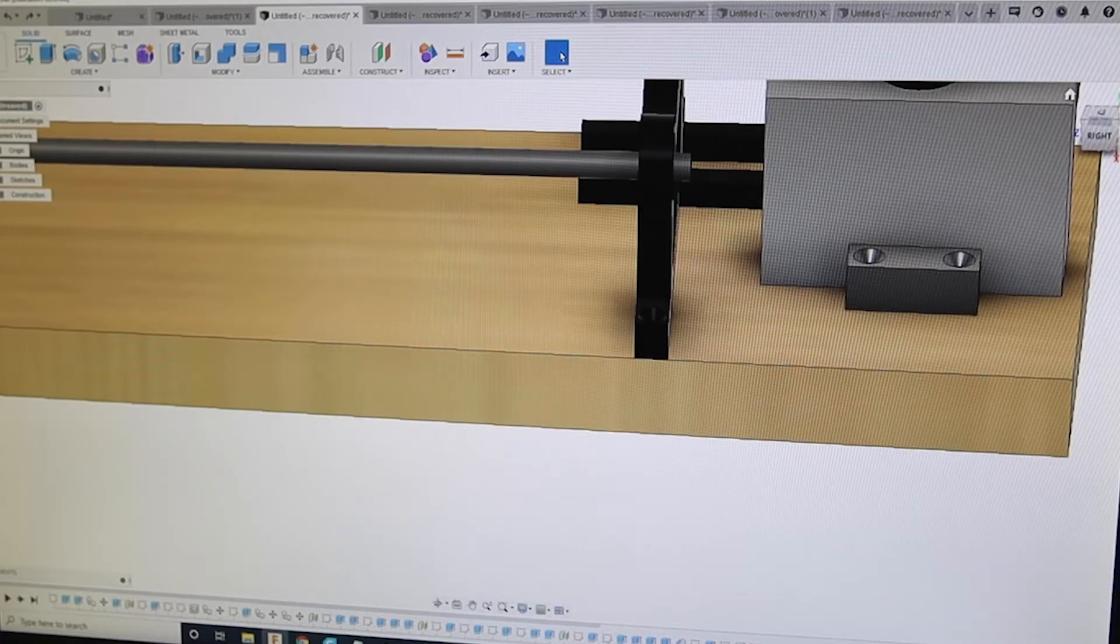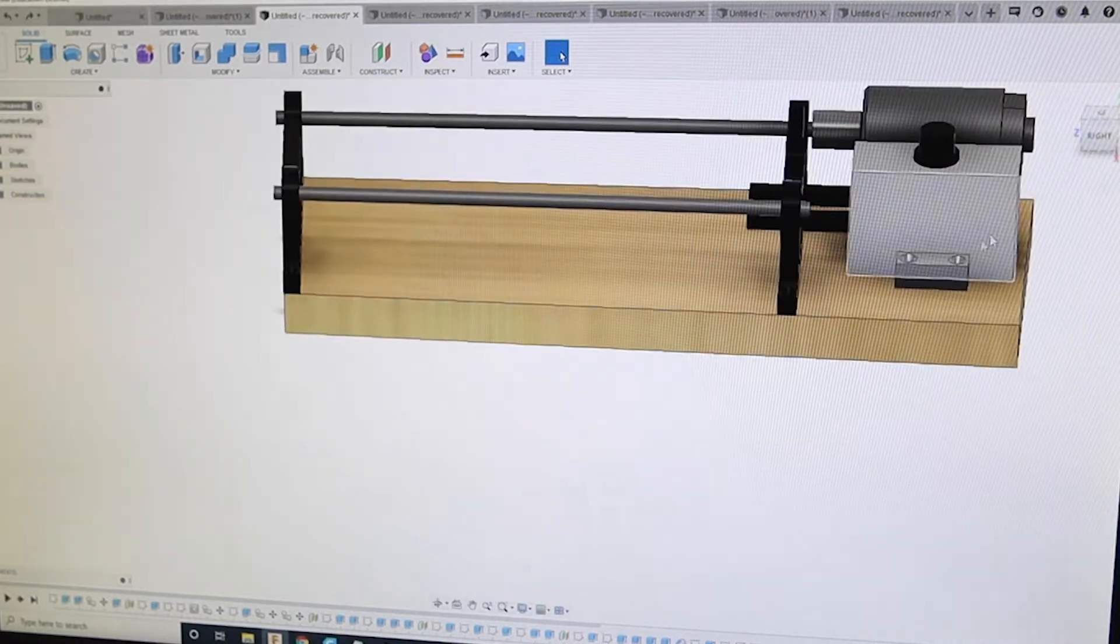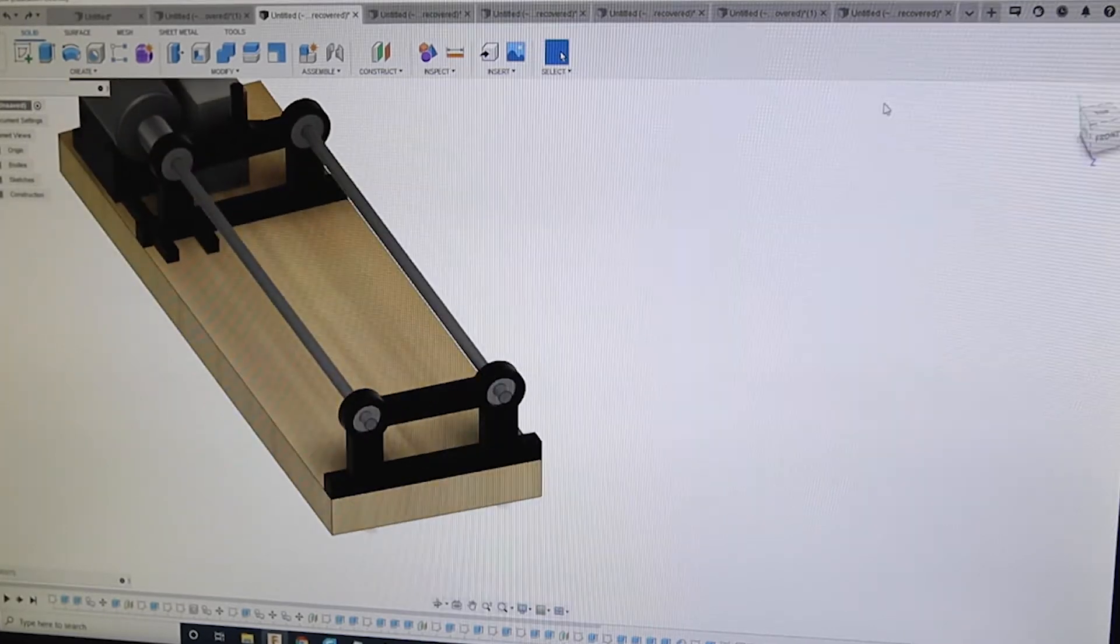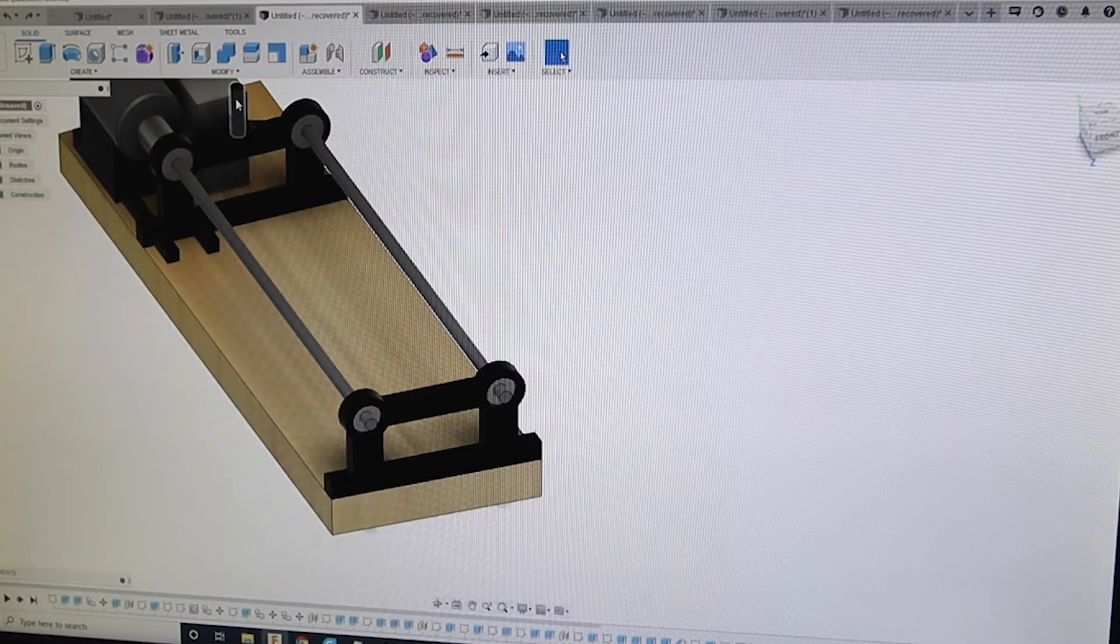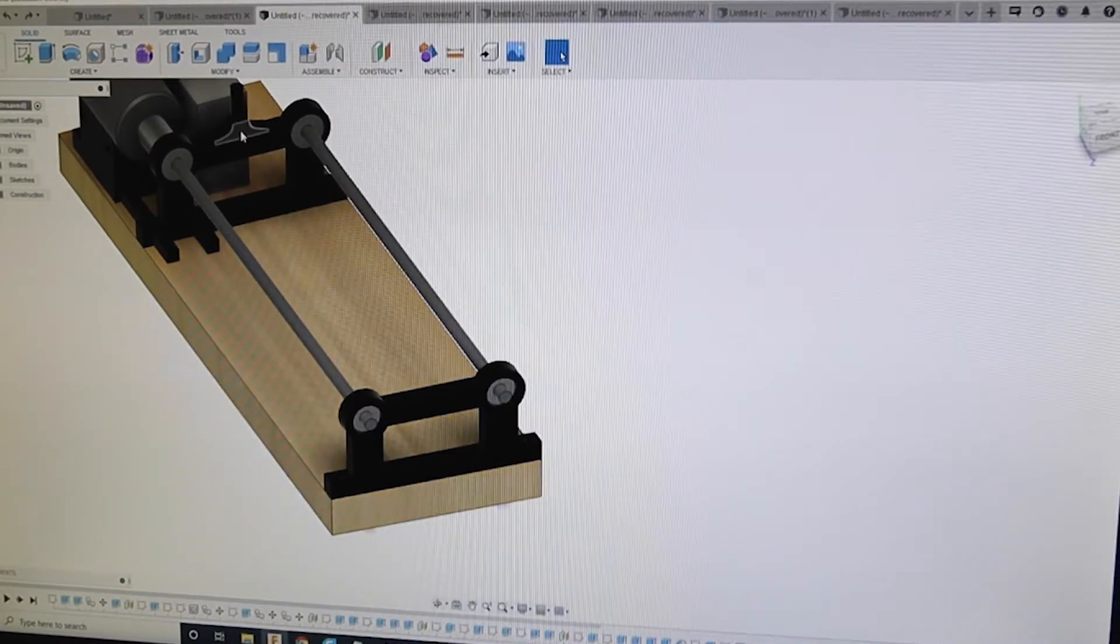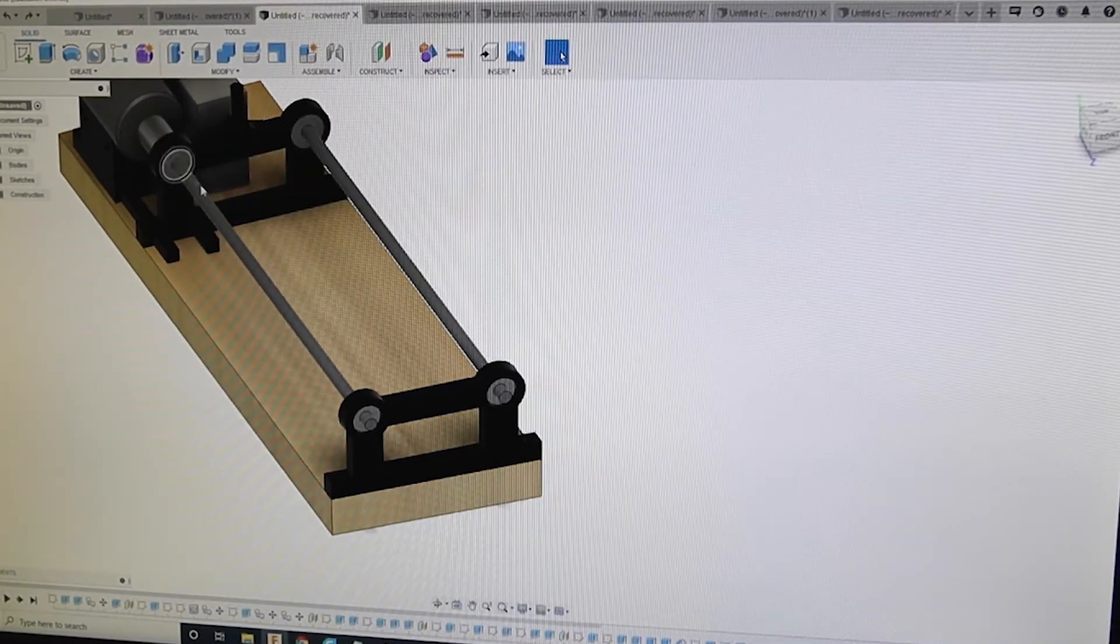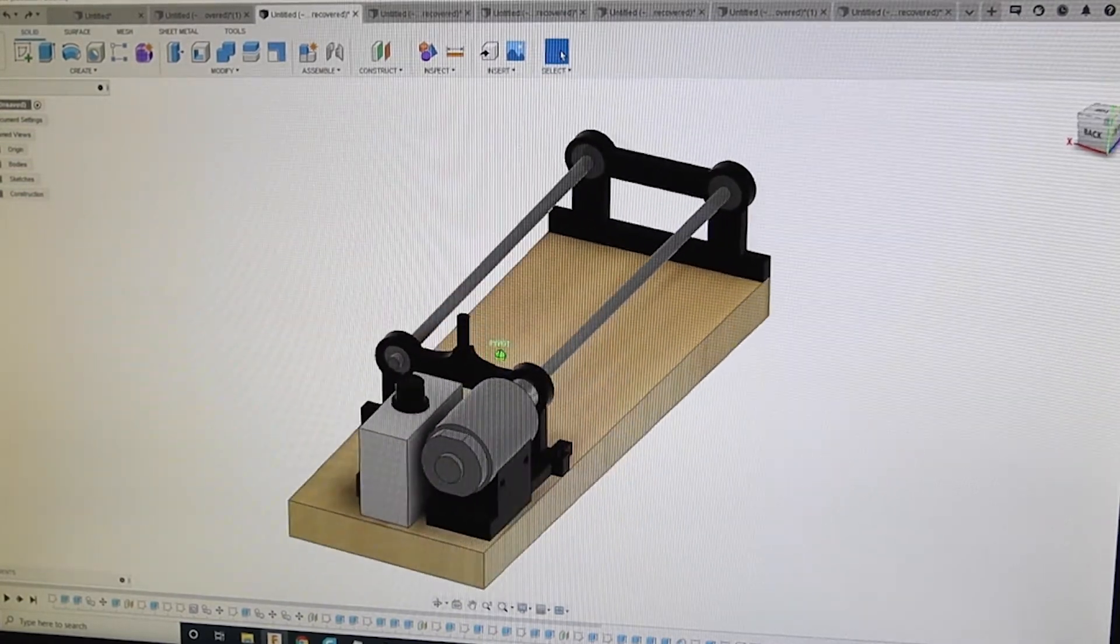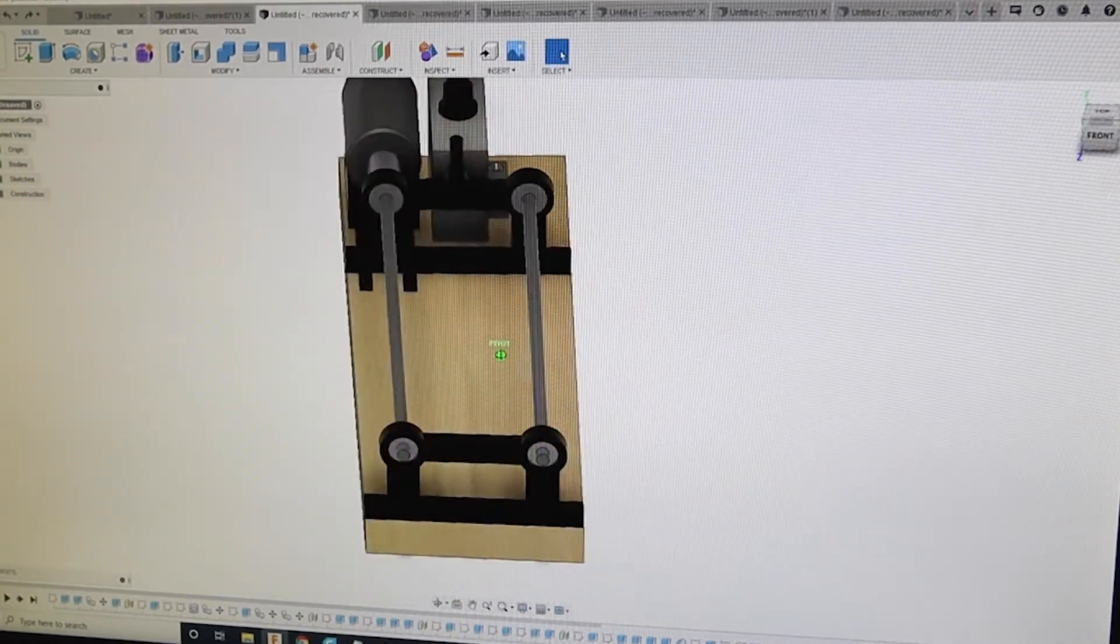There's also a mount right here to hold the speed controller down. So it's a pretty good starting place for everything. We also have another piece here to hold the bearing on here so it doesn't slide off the edge of the mount. So now that we have everything drawn out in CAD, let's get everything printed on the 3D printer.